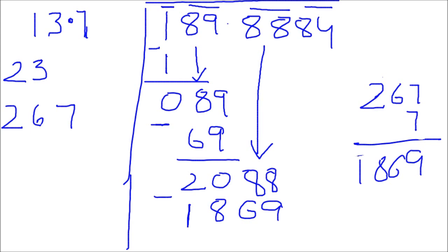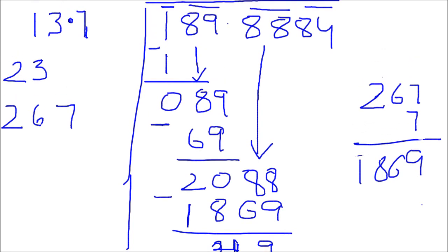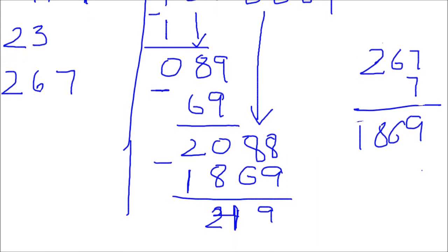Write 1869 under 2088 and subtract, giving remainder 219. Now double the previous guessed number 7: 7 times 2 is 14. Write 4 and carry 1 to the previous number. The previous number was 26, and 1 carried plus 6 gives 7, so we have 274 as the new working number.